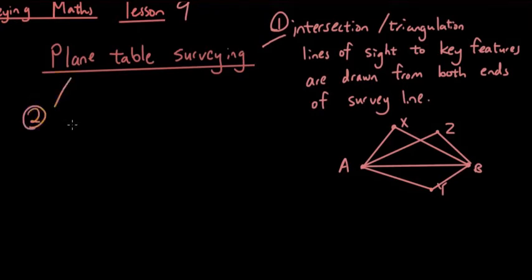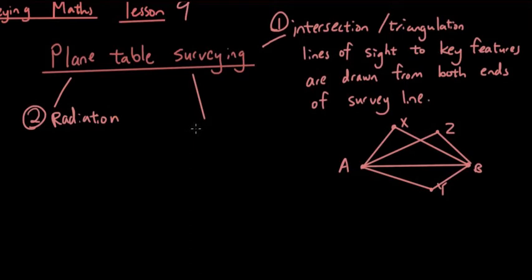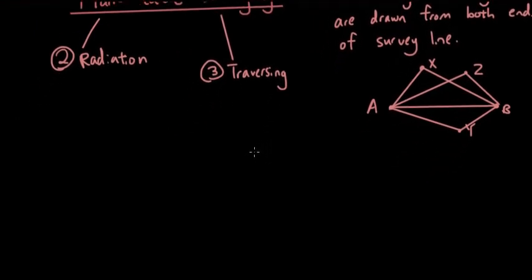The other two methods we're going to cover are: method two, called the radiation method — it sounds like something involving radiation but it's not — and method three, called traversing, which sounds very hard but I'll show you what it is and make it easy.